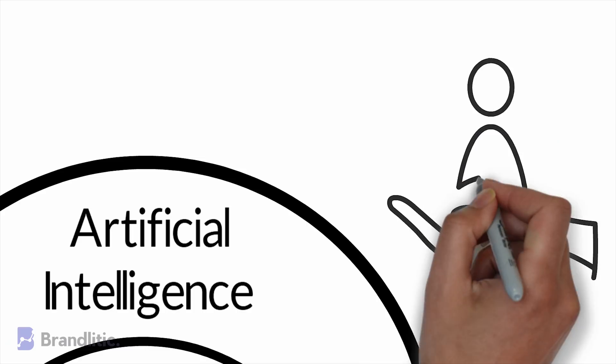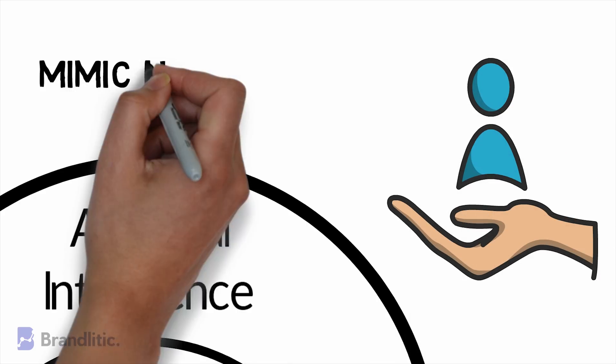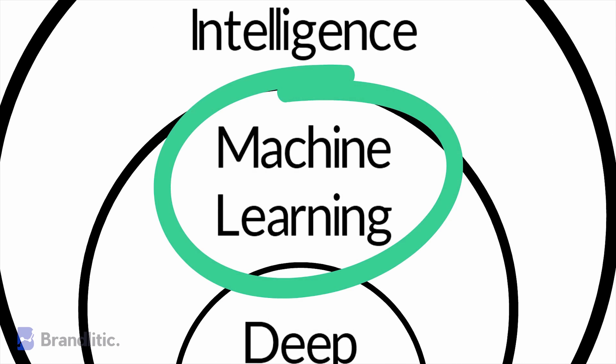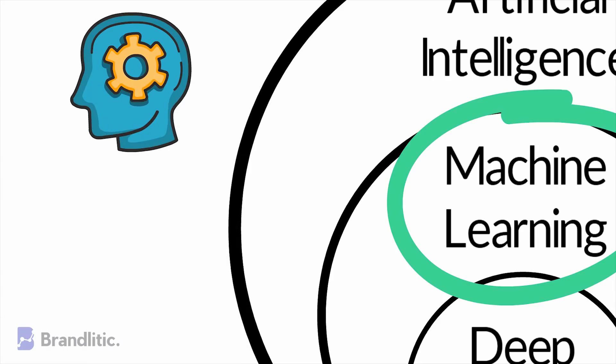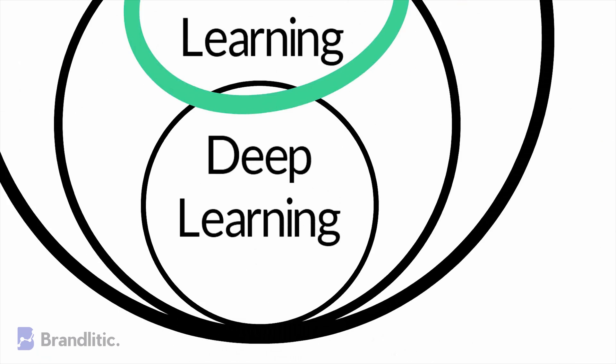As we know, artificial intelligence is a general term that refers to techniques that enable computers to mimic human behavior. Whereas machine learning represents a set of algorithms trained on data that make all of this possible and return an output based on series of input.